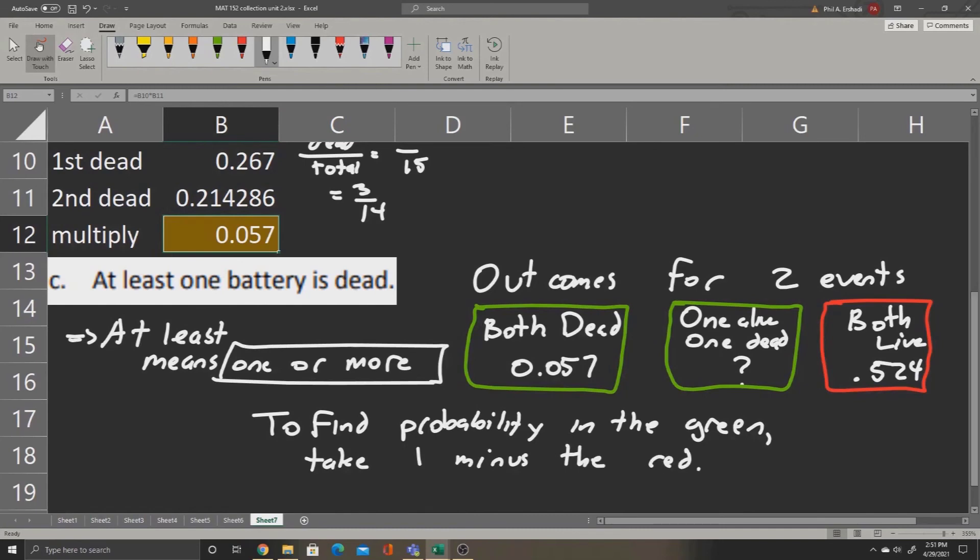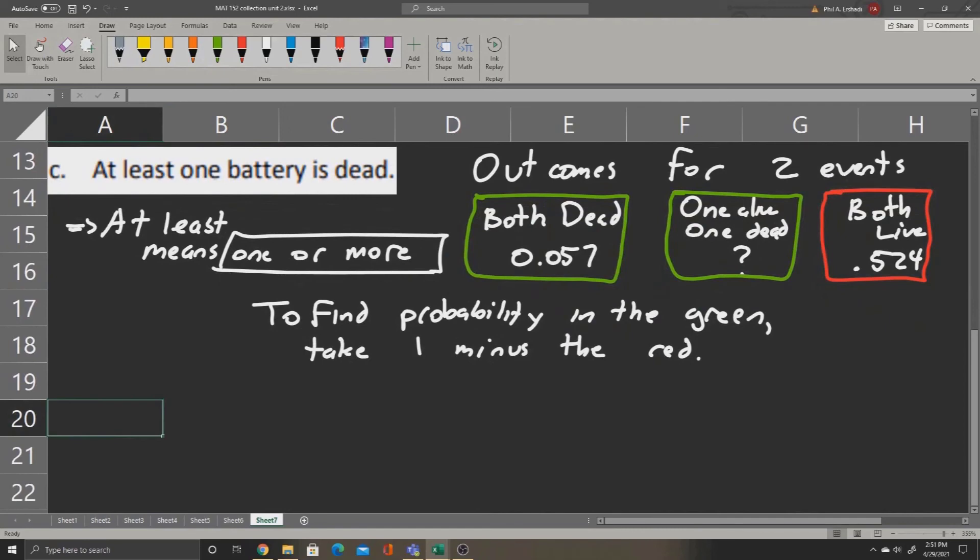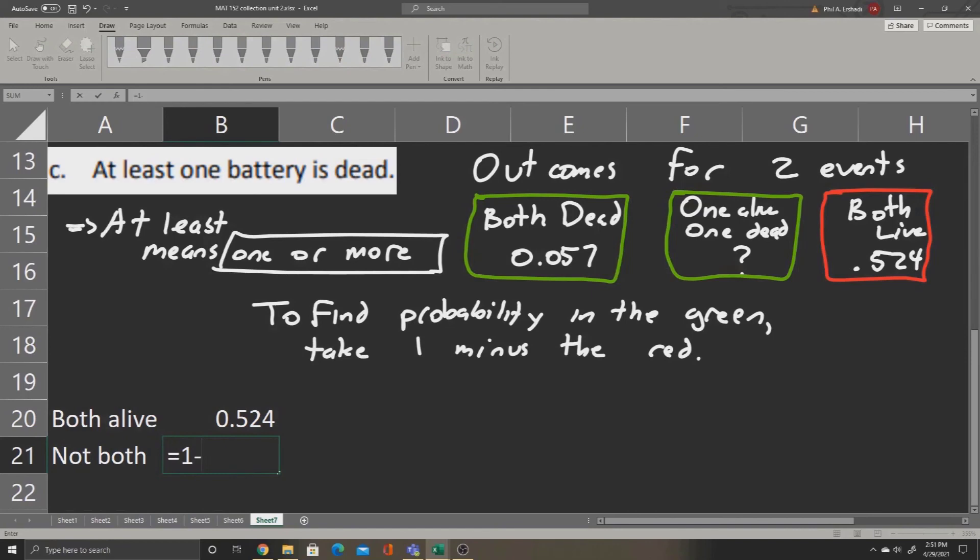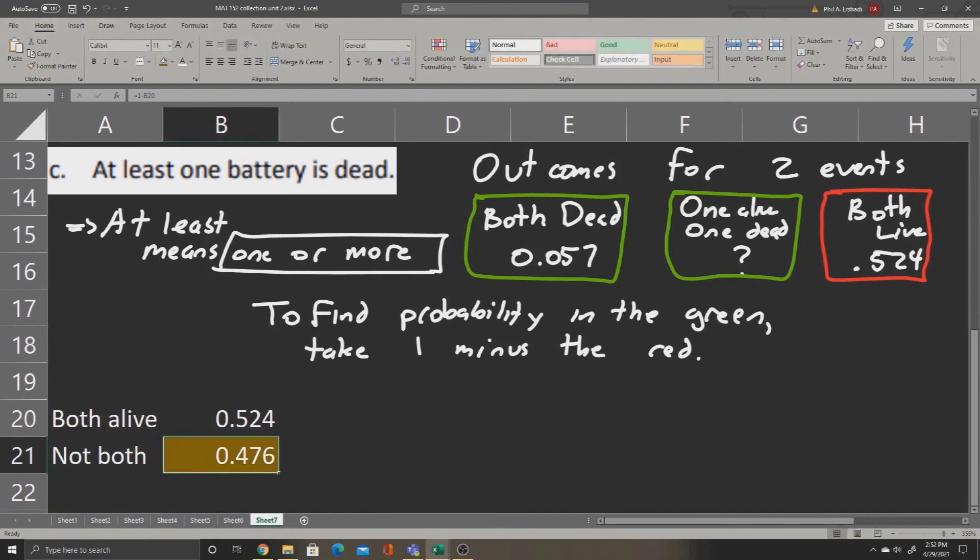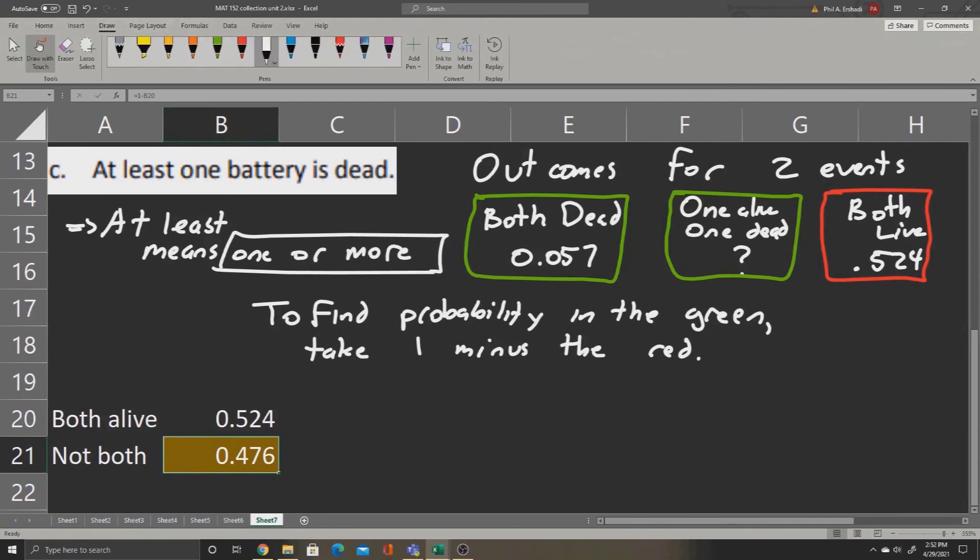Now thankfully, we've already calculated the probability in red. So let's place it down here as well. So the probability that both of them are alive was calculated in Part A. We can retrieve that number from Part A. It was 0.524. Now to find the probability that they are not both alive, we can take equals 1 minus the 0.524 that was in red. When we press enter, we'll find we have 0.476. This is the probability of having either both dead batteries or one dead battery, whereas the 0.524 was the probability that none of them are dead.